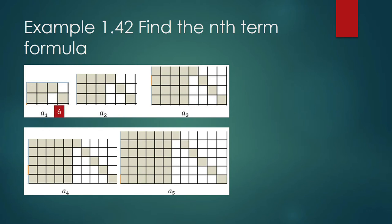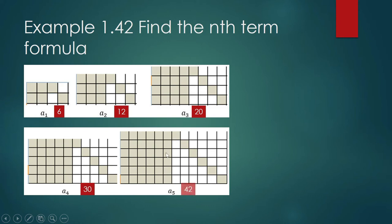For the second term, that is 9 plus 3, which is 12. For the third term, that is 4 times 4 plus 4, which is 20. For the fourth term, it is 5 times 5 plus 5, which is 25 plus 5, that's 30. And for the fifth term, 6 times 6 is 36 plus 6, which is 42.